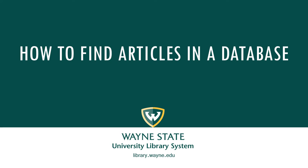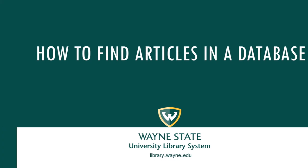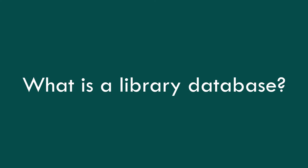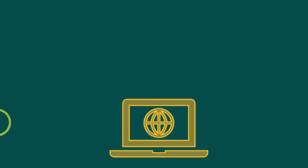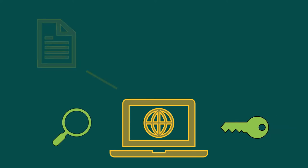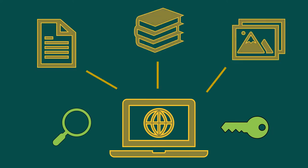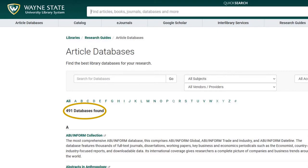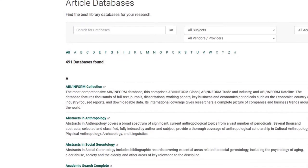This video will focus on library databases and how you can find one and search for articles or other library resources. A library database is an online resource that helps you locate and access information sources such as scholarly journal articles. Most databases are behind paywalls like a Netflix or Hulu subscription. Wayne State University Libraries license over 400 databases that students have access to for research.